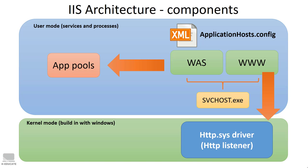The Windows Activation Service (WAS) handles the management of the application pools, as well as the code processing and execution of applications. Since the worker process (w3wp.exe) runs inside the application pool, WAS also manages that process. This is a small overview of the IIS architecture components. Thank you for following and see you in another lecture.